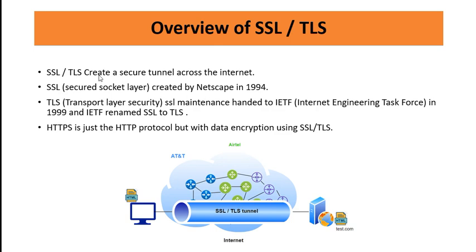SSL and TLS create a secure tunnel across the internet. As you can see in this image, from the internet itself we have created a secure tunnel — sometimes also called a VPN (Virtual Private Network). It's a direct secure tunnel so nobody can see your data. SSL was created by Netscape in 1994. TLS (Transport Layer Security) is essentially SSL whose maintenance was handed over to the IETF (Internet Engineering Task Force) in 1999, and IETF renamed SSL to TLS. Both SSL and TLS are the same thing, just different names.